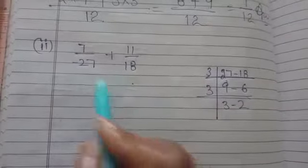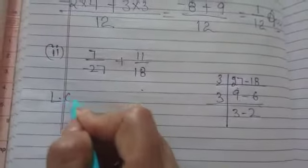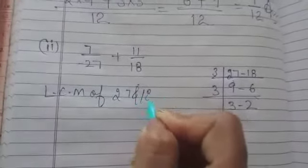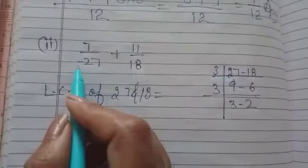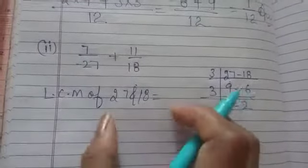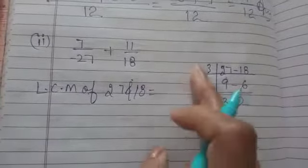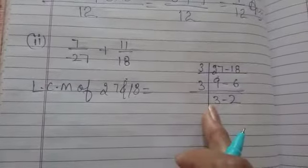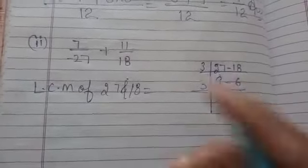This is our next question. In which again we will take LCM of 27 and 18. What will be the LCM? Negative sign will not be considered in the LCM. Now we can multiply all the numbers. 3 times 3 is 9. 9 times 3 is 27. 27 times 2 is 54.